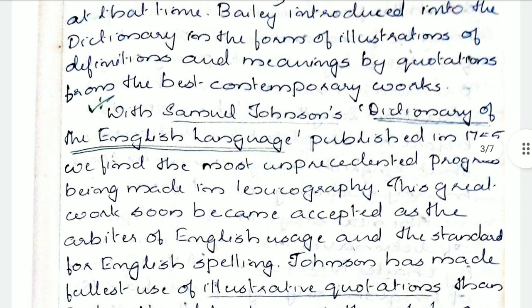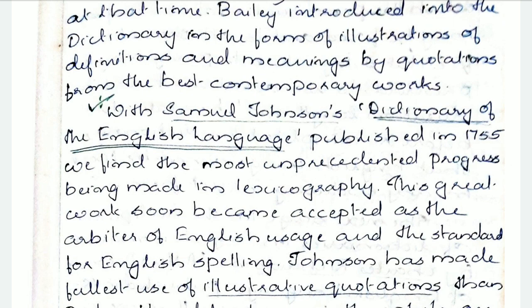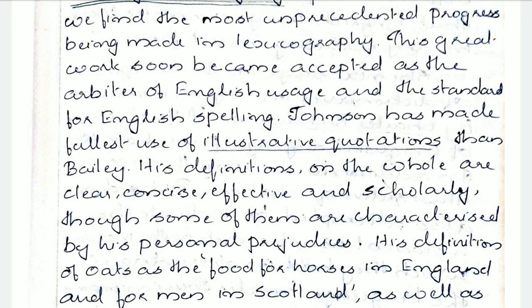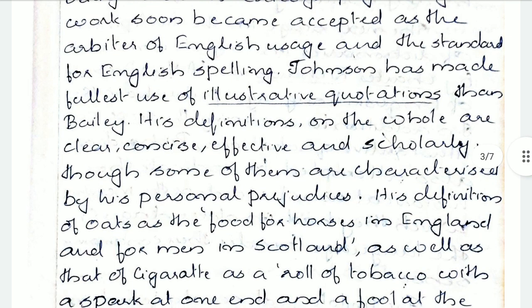Samuel Johnson's Dictionary of the English Language was published in 1755, and this is the most important for you — it can be asked as a paragraph or format question, so pay close attention. We find the most unprecedented progress being made in lexicography. This great work soon became accepted as the arbiter of English usage and the standard for English spelling. Johnson used to give so many beautiful illustrative quotations, phrases, and his definitions. His definitions on the whole are clear, concise, effective, and scholarly, because the spirit of that age is reflected in the compilation of that dictionary.